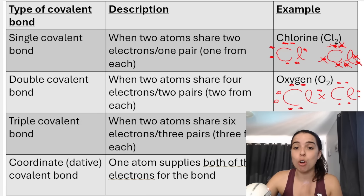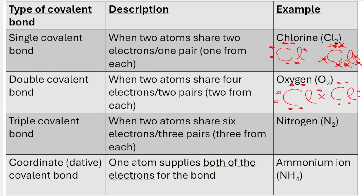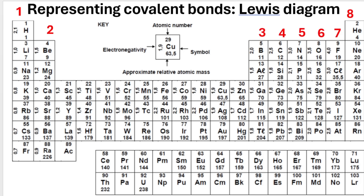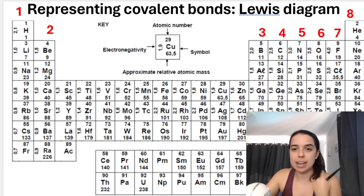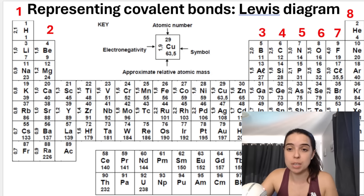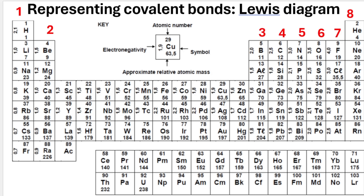These are the different types of covalent bonds you'll be learning about. I'll go over them briefly in this video, covering how to draw a Lewis dot diagram for elements and then for compounds. We'll go over each type and do examples in separate videos, especially the dative covalent bond. We need to grab a periodic table to draw Lewis dot diagrams — use the one in your exam guidelines, which is the one given to you in tests and exams.